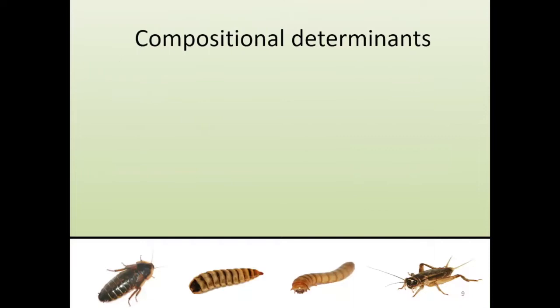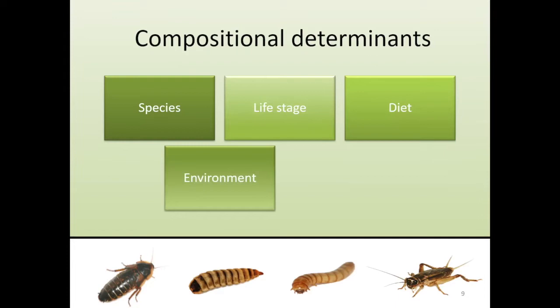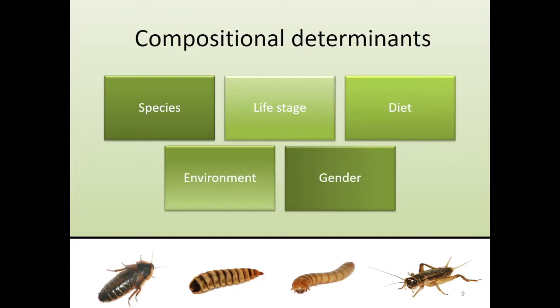What determines the composition of an insect? Species is a very important determinant — different species have different nutrient profiles. Life stage is also very important: young crickets are not the same as old crickets. Diet is arguably the most important determining factor — I'll show examples of what you can achieve by altering the insect's diet. The rearing environment also plays a role, and lastly, gender plays a role as well.